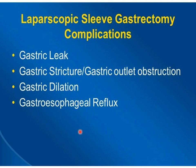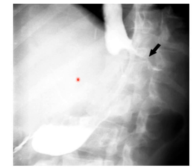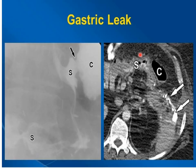Laparoscopic sleeve gastrectomy complications include leak, stricture, gastric outlet obstruction, gastric dilatation, and gastroesophageal reflux. The gastric leak occurs along the long staple lines of the greater curvature, most commonly at the proximal end of the staple line near the gastroesophageal junction. Pain, fever, and leukocytosis are common presentations. Extravasation of contrast with extra-luminal collection and abscess is noted. This image shows a leak at the staple site, and another picture shows contrast extravasation through the staples.